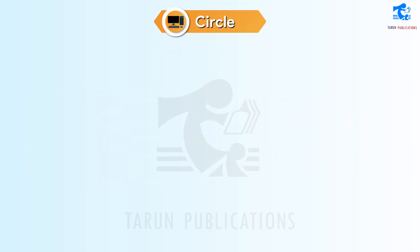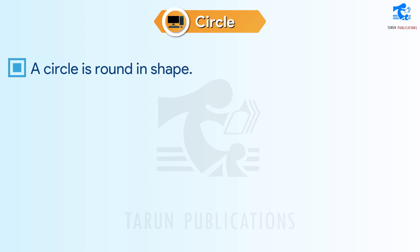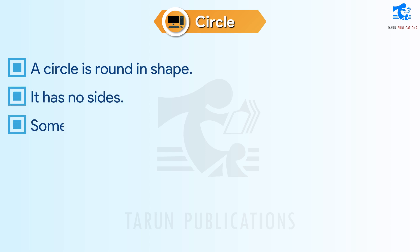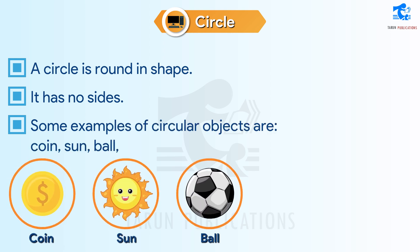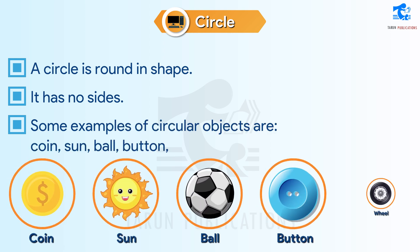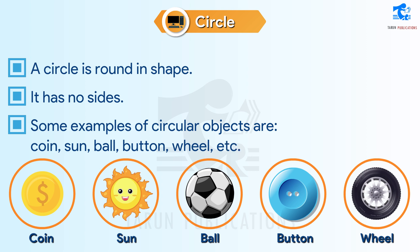Circle. A circle is round in shape. It has no sides. Some examples of circular objects are coin, sun, ball, button, wheel, etc.